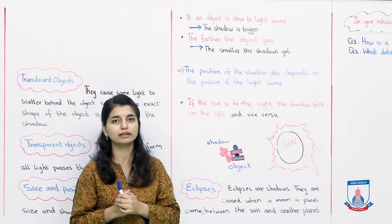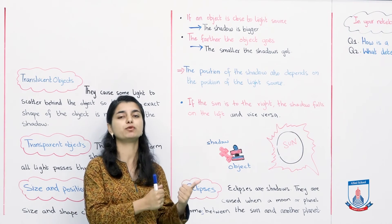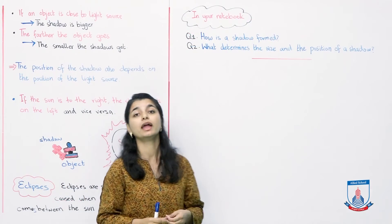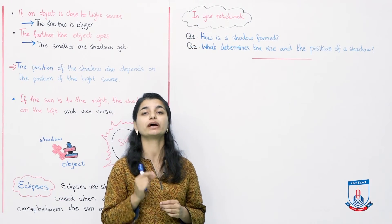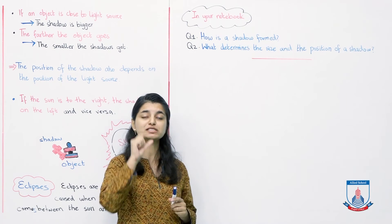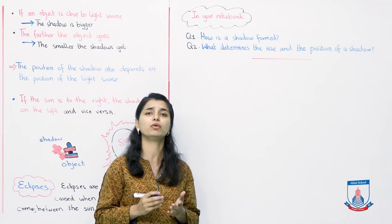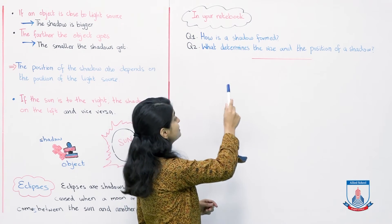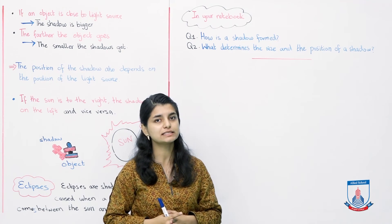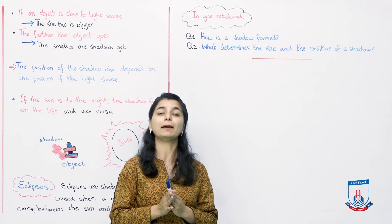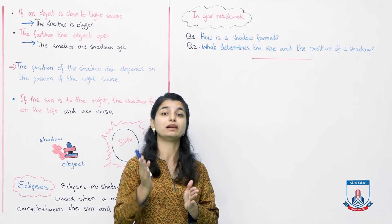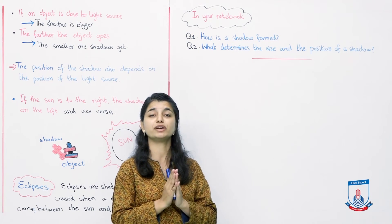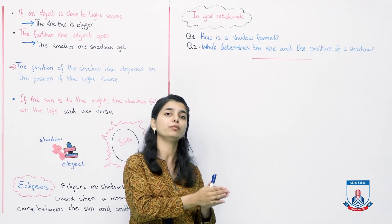We will cover Unit 7.3 in the next lesson. For now, let's do a small exercise. In your notebook, there are two questions. Question 1: How is a shadow formed? We discussed this in detail — when you put light on an opaque or translucent object, the light cannot pass through it, and a shadow is formed in the background behind the object.